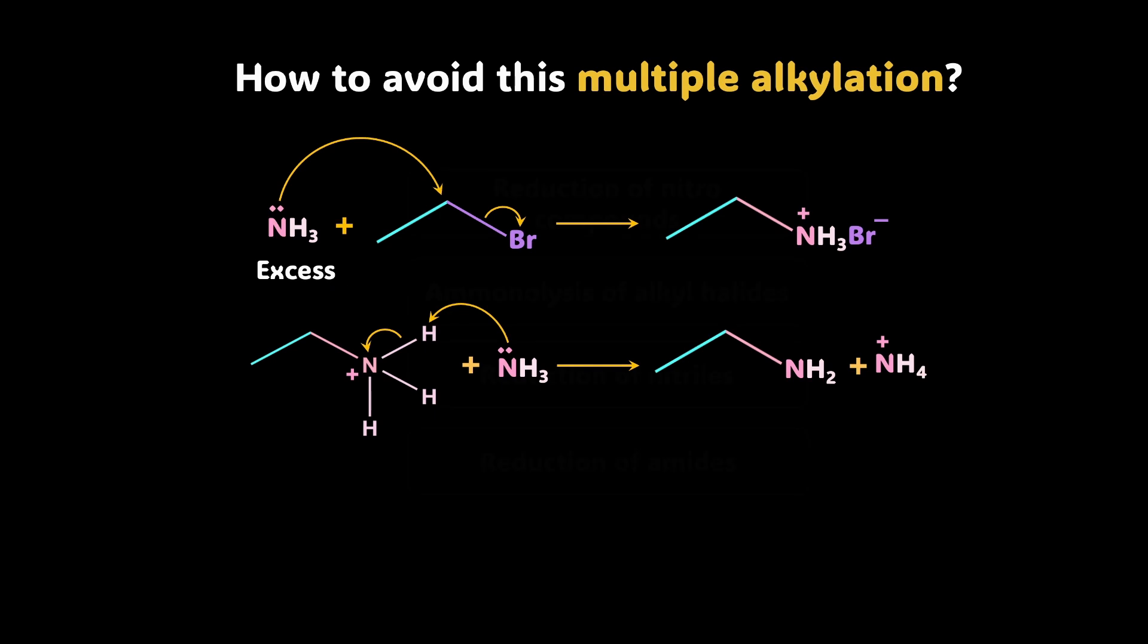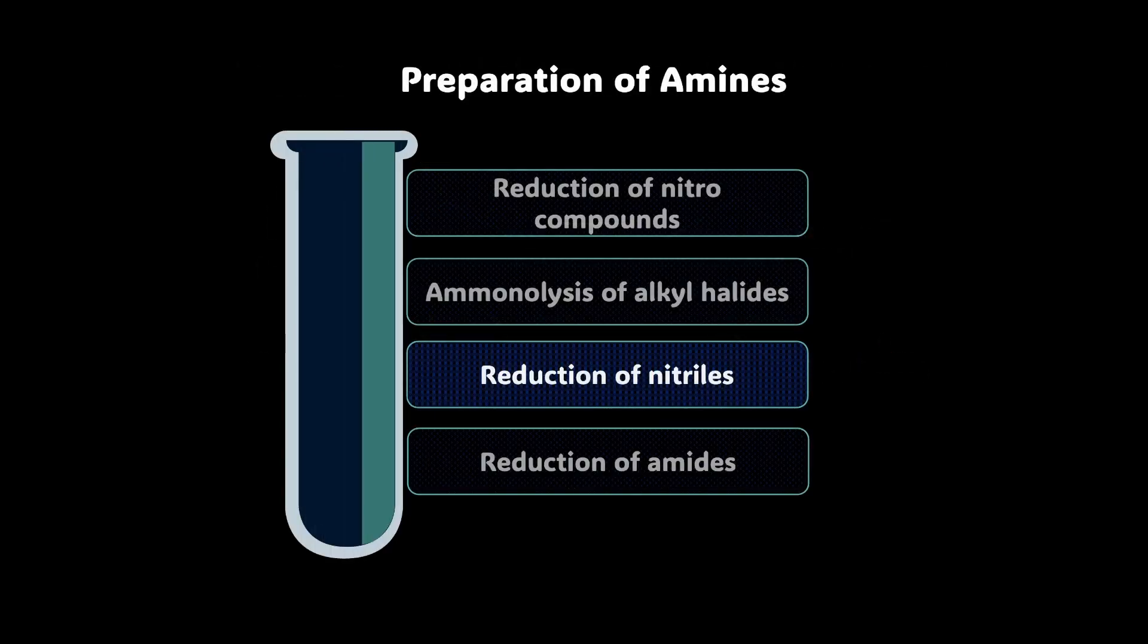Now let's move on to the next method that is reduction of nitriles. So nitrile group like you know is CN group. So what you can do is you can start with any alkyl cyanide. Add to it hydrogen in the presence of nickel and what you're getting is, you can see, it's simple reduction, CH2NH2. Check. Right?